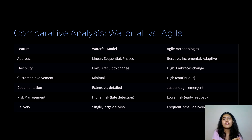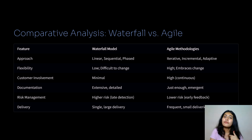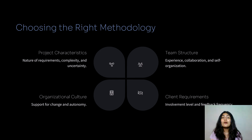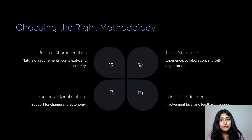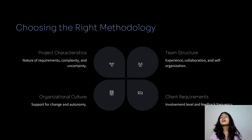Delivery: in the waterfall model, delivery happens only once at the very last step. In agile, delivery of the product with feedback happens at each iteration. Now let's see how to choose the right methodology for a project. There are four properties to consider. The first is project characteristics — examining the nature of the requirements and whether a particular project is complex or not.